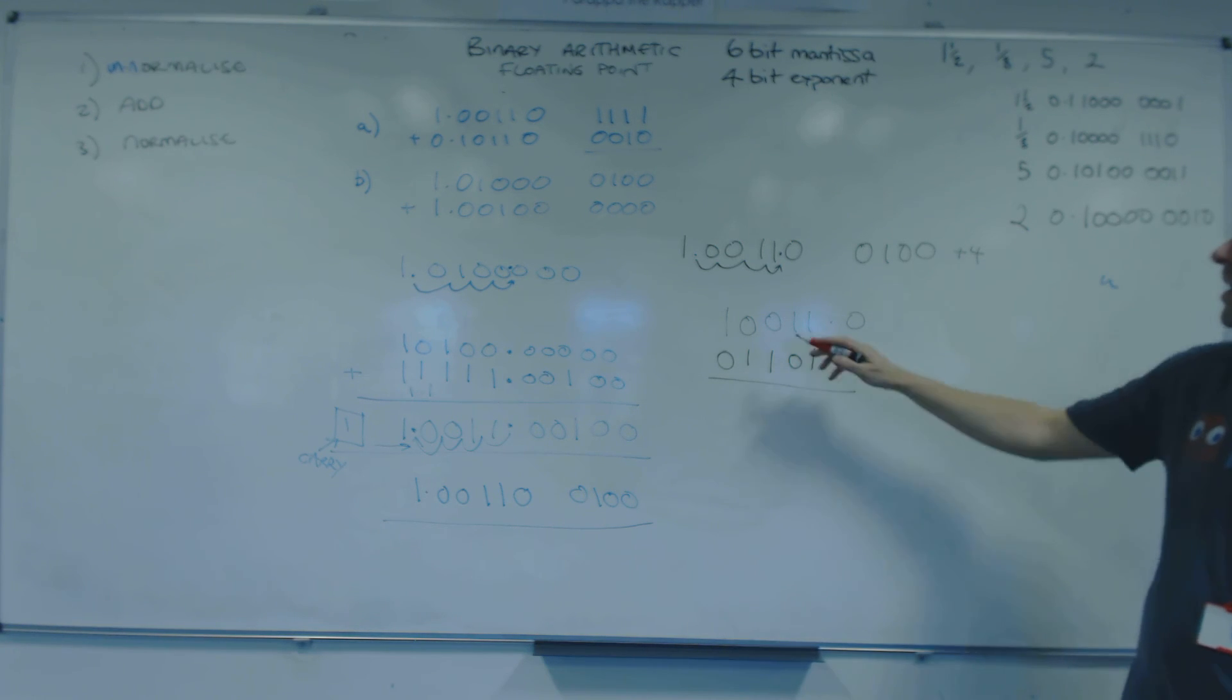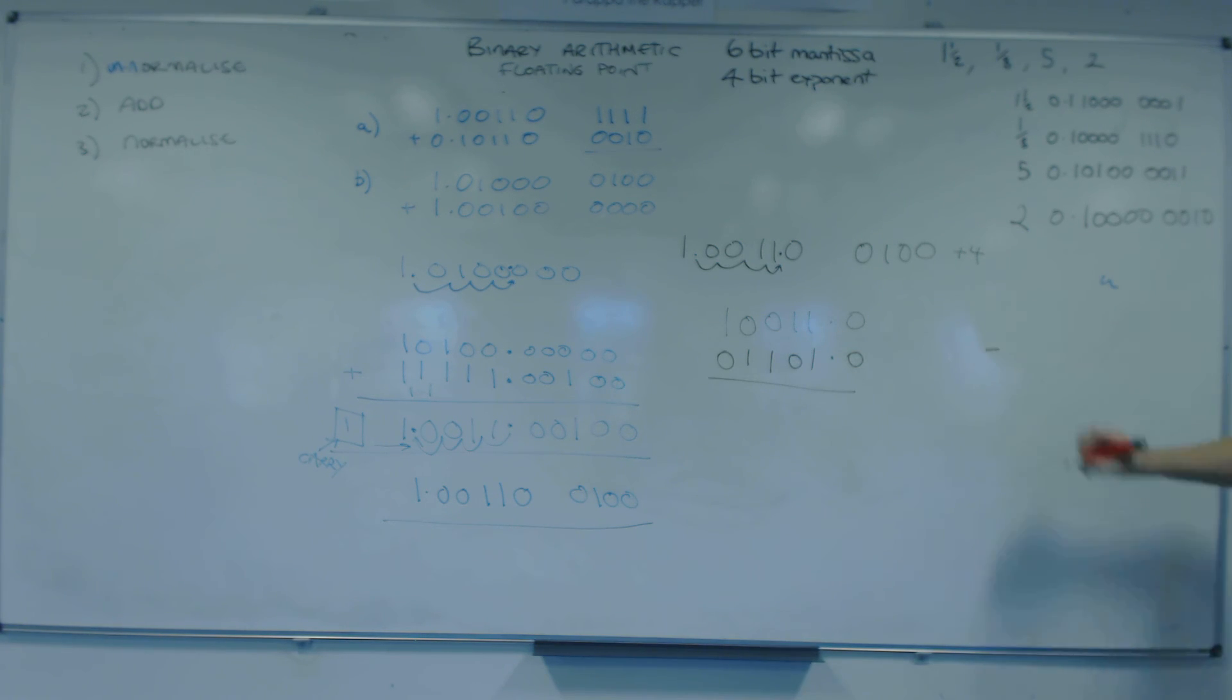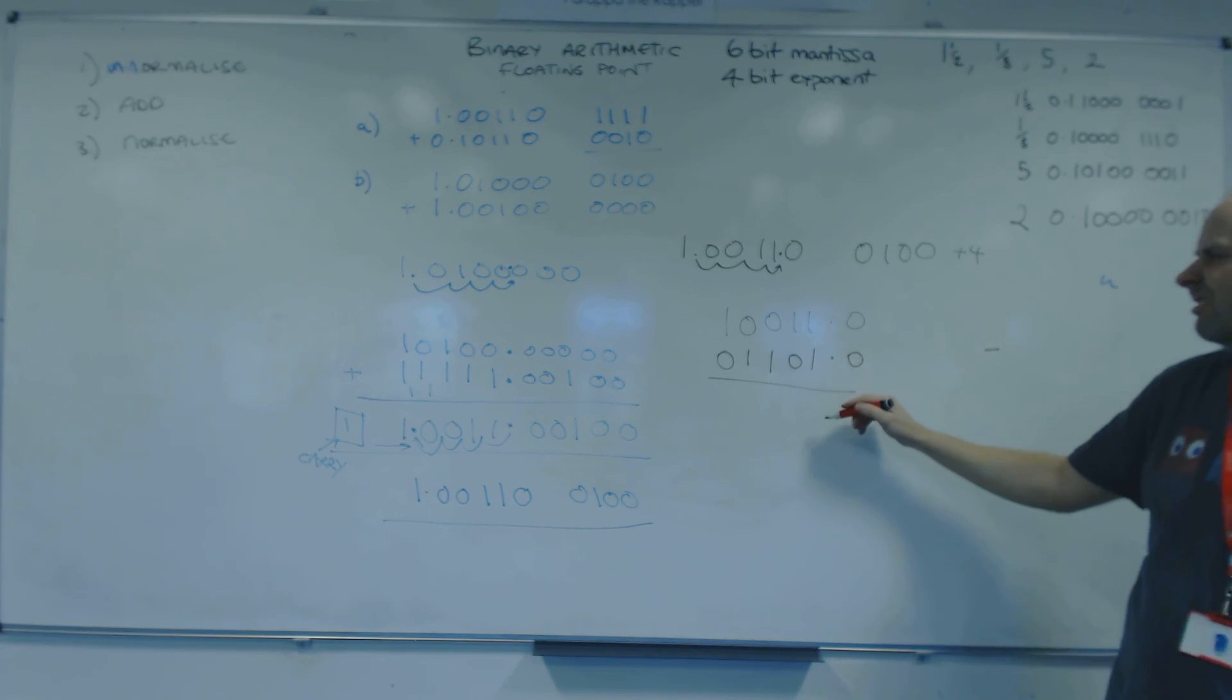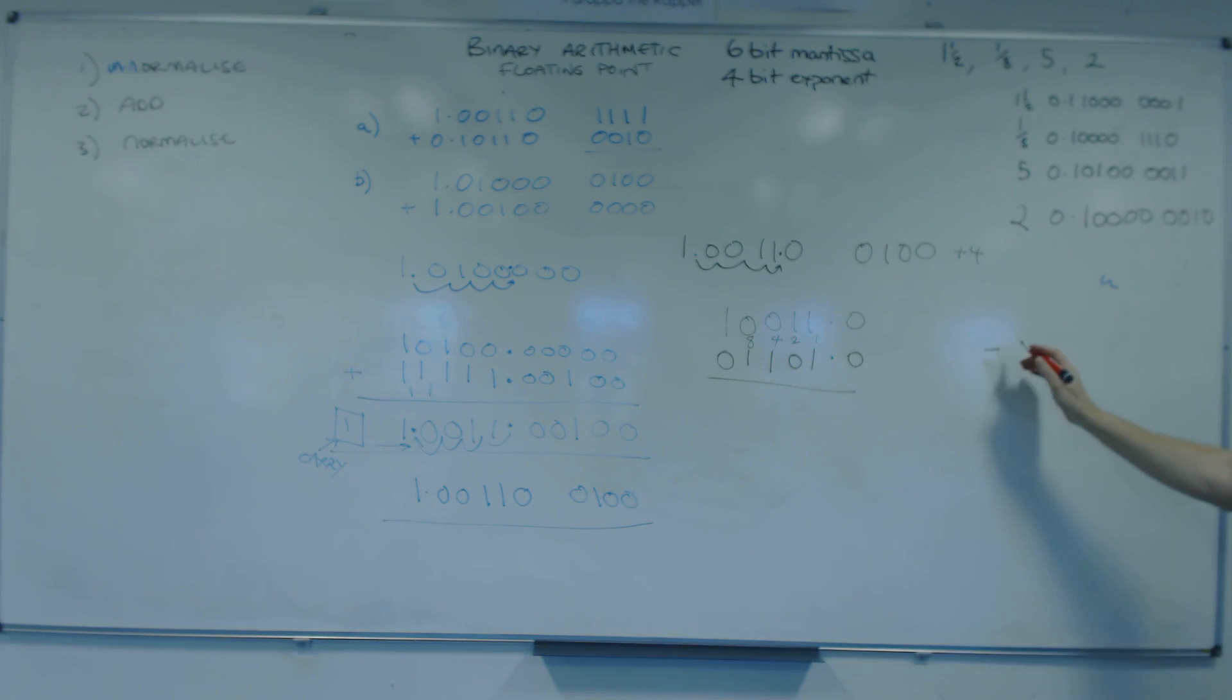Right, so we know we've got a negative so our answer is minus something. We just need to read what it is. Now we've got the point in the right place. We can say that's a 1, 2, 4, 8. So it's actually minus 13.